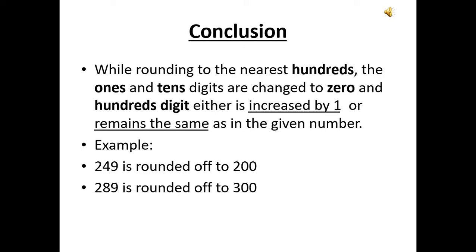Let us consider one example. 249 is rounded off to 200. The ones and the tens digits are changed to 0 and the hundreds digit remains the same as the given number, since 249 is less than 250. Now for 289, the ones and the tens digits are changed to 0 and the hundreds digit is increased by 1, so it is rounded off to 300 because its nearest hundred is 300.